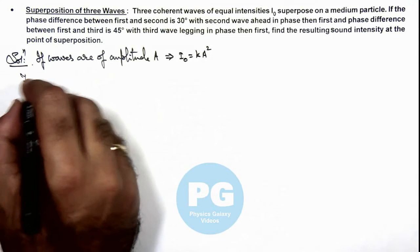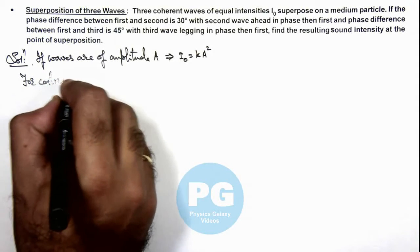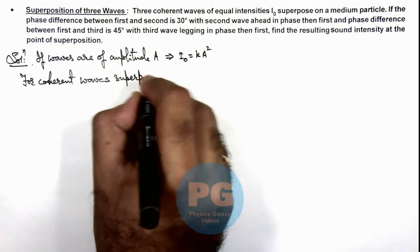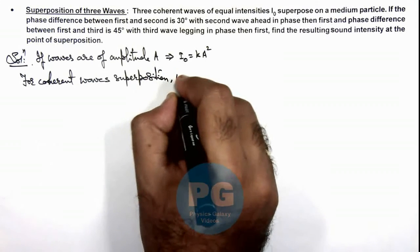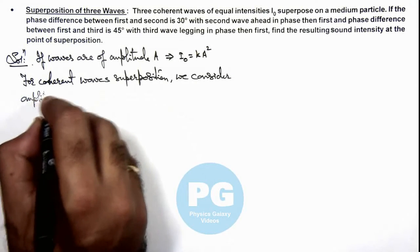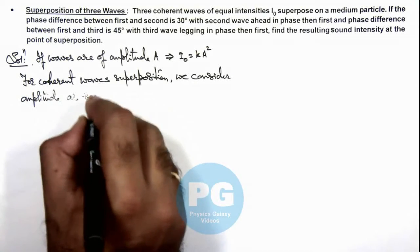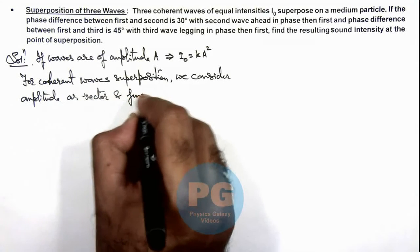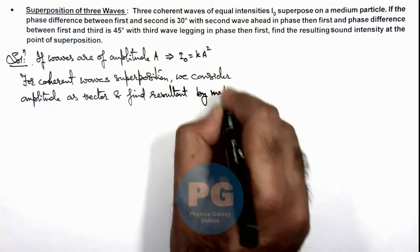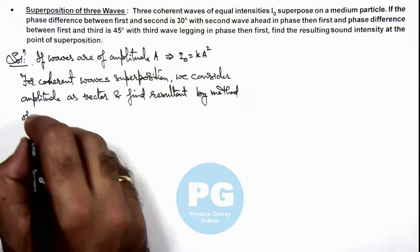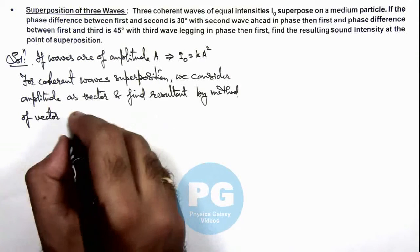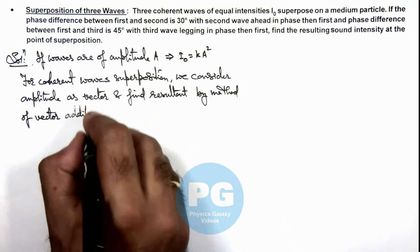For coherent waves superposition, we consider amplitude as vectors and find resultant by method of vector addition. This we already discussed in superposition of oscillations in concept videos, so that's what I am applying over here.